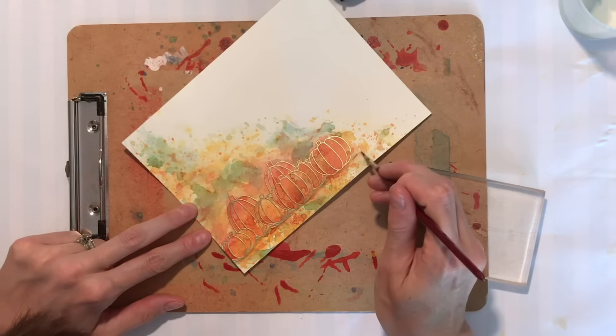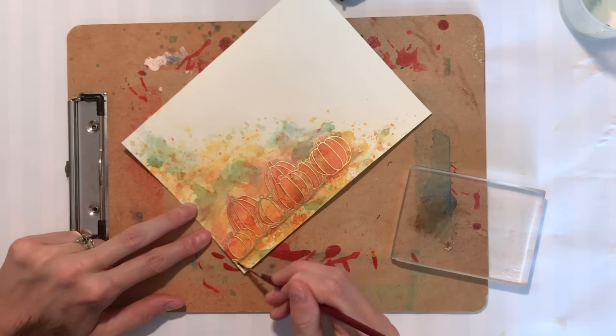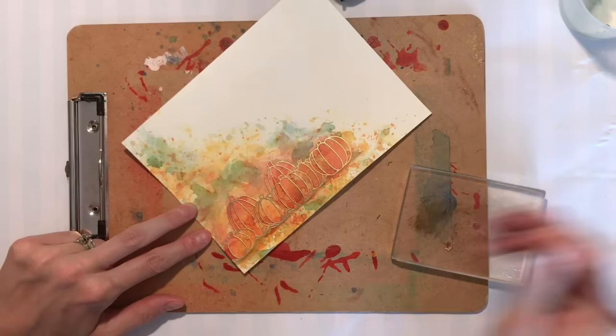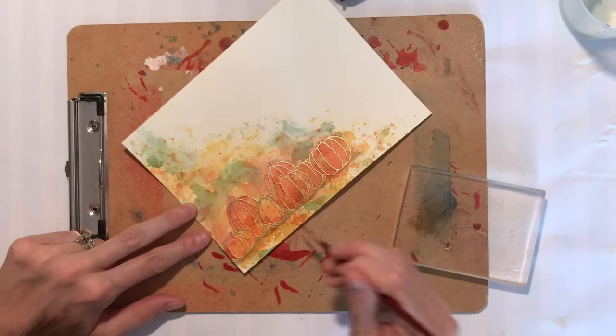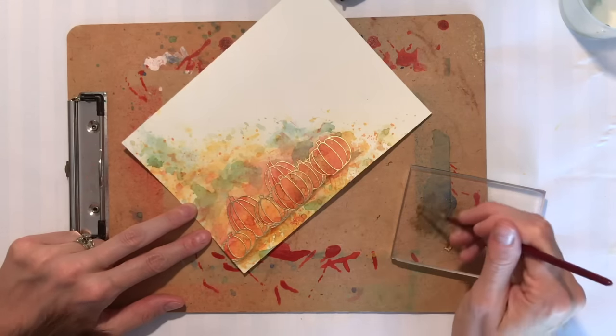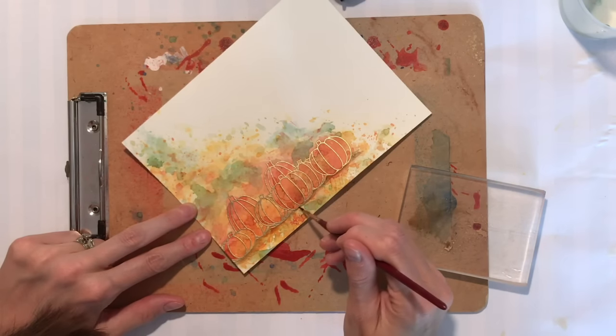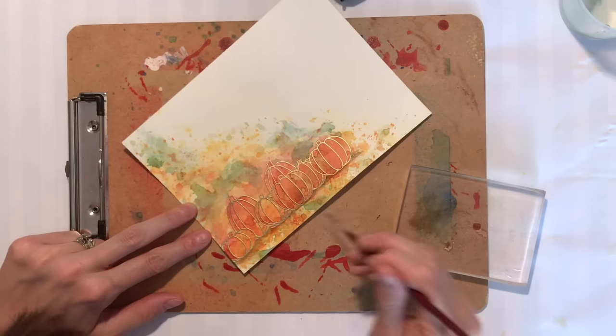This is going to help those pumpkins stand out again from that background and also it is going to make them pop and ground them. I'm making the deeper creases where it should be darker. I'm applying more of that ink so they're a little bit darker.